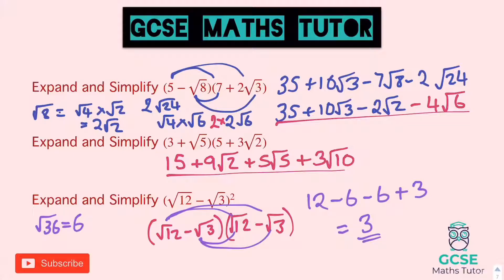So some very different questions there. The first one we had to simplify root 8 and root 24 after expanding. The second one, there was no simplifying at all — we just got a very long answer with nothing that joined up. And that last one was completely different: we ended up with 4 whole numbers and a final answer of 3.